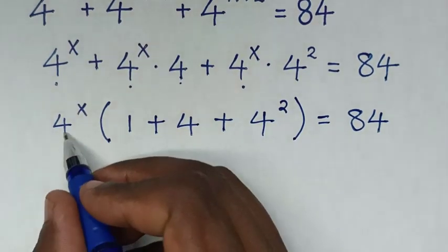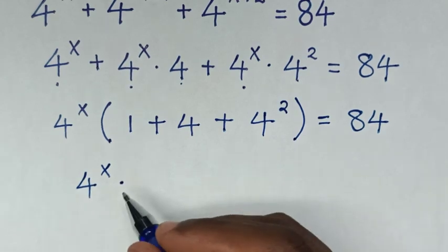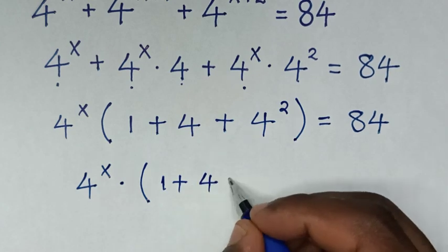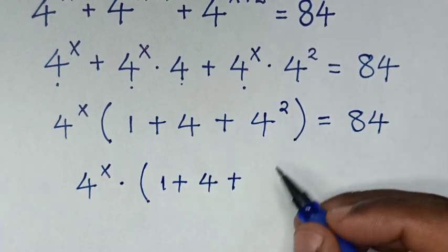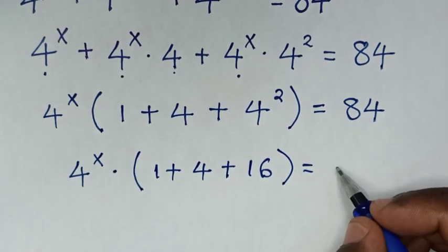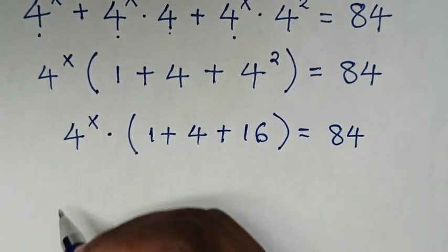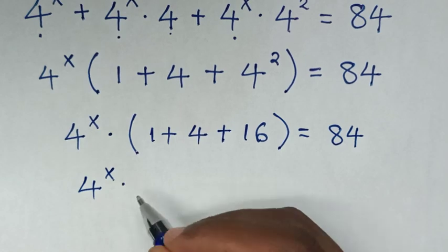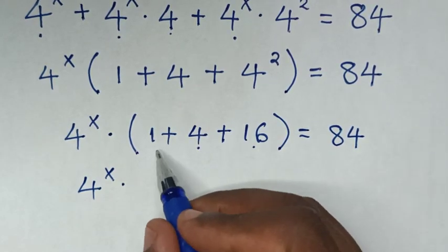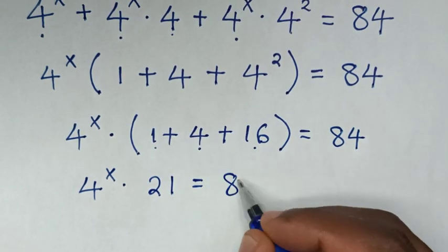Then in the next step, it will be 4 power x times the bracket 1 plus 4 plus 16, which equals 21, is equal to 84.